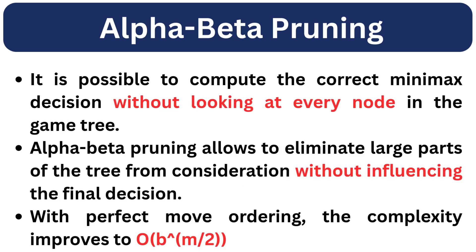Alpha-beta pruning prunes unnecessary branches, reducing computation while keeping the correct result. It is possible to compute the correct min-max decision without looking at every node in the game tree. Alpha-beta pruning allows us to eliminate large parts of the tree from consideration without influencing the final decision. With perfect move ordering, the complexity improves to order of B^(M/2), which is a huge speed-up.